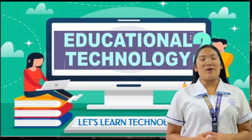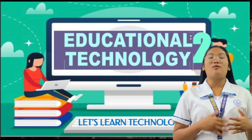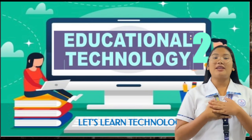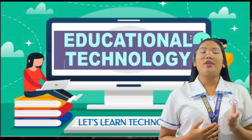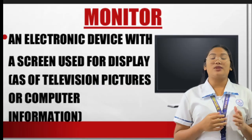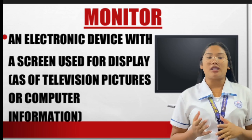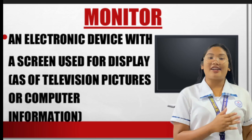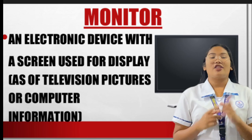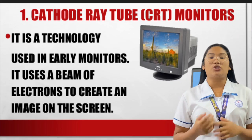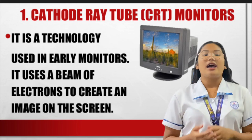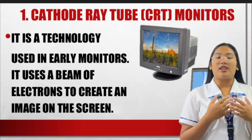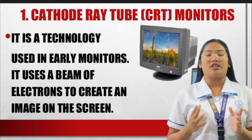Hello everyone, I am Danica Einart and I will discuss to you the types of monitors. But before that, let me explain what is a monitor. A monitor is an electronic device with a screen used for display of television pictures or computer information. The first type is the cathode ray tube, or CRT monitor. It is a technology used in early monitors that uses a beam of electrons to create an image on the screen.